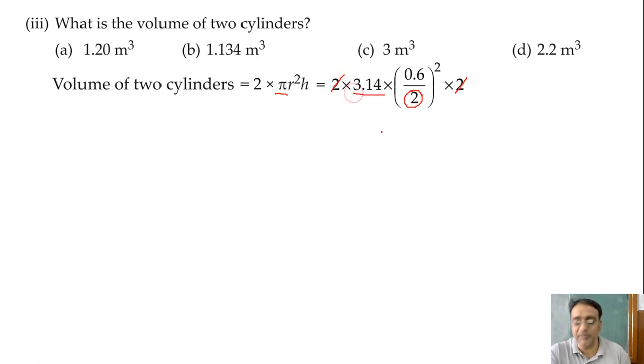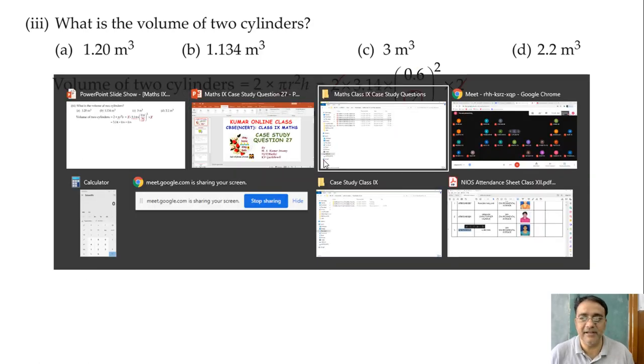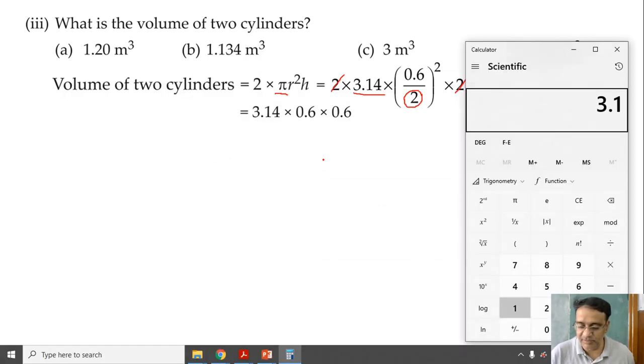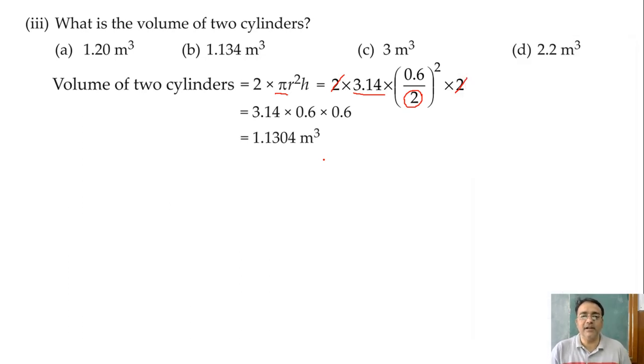So what we are getting: 3.14 into 0.6 into 0.6. Whether this cancellation is clear? Yes. So if you multiply this, let me multiply 3.14 into 0.6 into 0.6. So we are getting 1.1304 meter cube. So which is the correct answer?